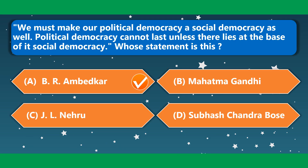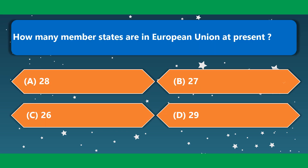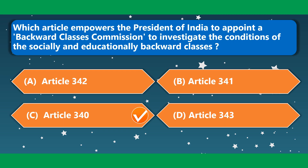'We must make a political democracy a social democracy as well. Political democracy cannot last unless there lies at the base of it a social democracy.' This is the famous statement of B.R. Ambedkar. How many member states are in the European Union at present? 27. Which article empowers the President of India to appoint a Backward Classes Commission? The correct option is Article 340.